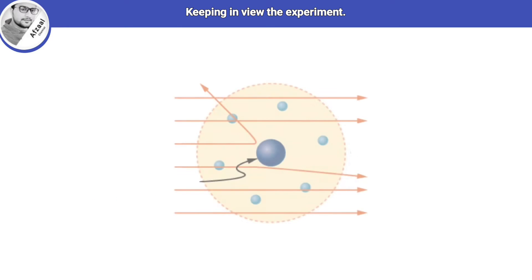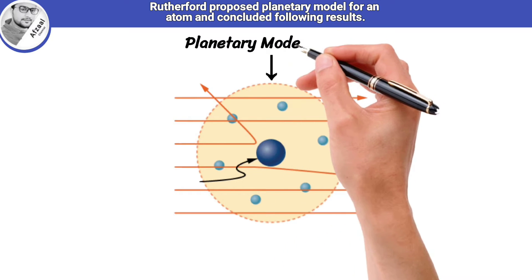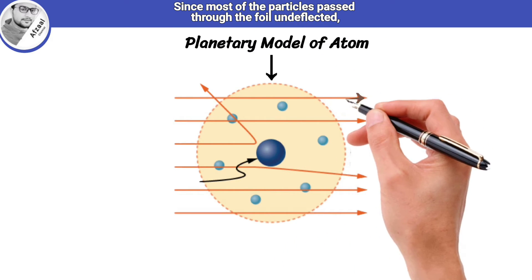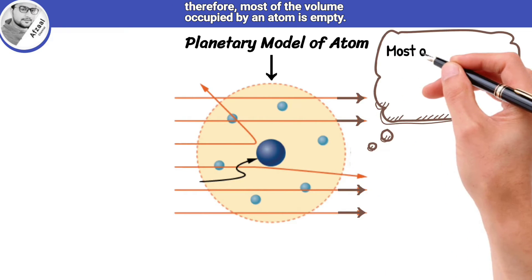Keeping in view the experiment, Rutherford proposed planetary model for an atom, and concluded following results. Since most of the particles passed through the foil undeflected, therefore most of the volume occupied by an atom is empty.